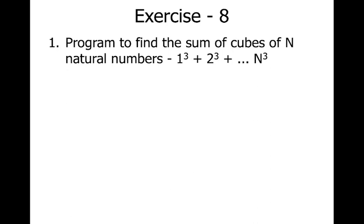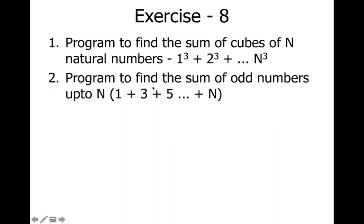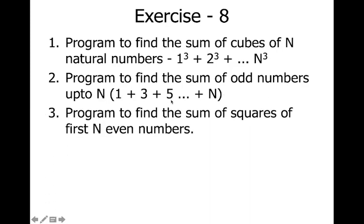There are three exercise questions for this topic. First, write a program to find the sum of cubes of N natural numbers (1³ + 2³ + ... + N³) using a do-while loop. Second, find the sum of odd numbers up to N (1 + 3 + 5 + ...). Third, find the sum of squares of the first N even numbers. Use do-while loop for all three — you have seen similar programs with while loops before.